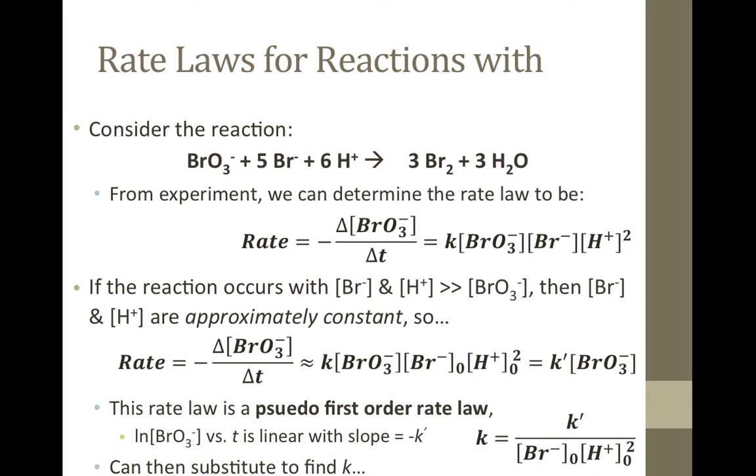It is first order with respect to bromate and bromide, but it's second order with respect to the hydrogen ion. Perhaps graphical methods and the integrated rate laws were used to determine the order of each reactant, but now we need to find the rate constant K.